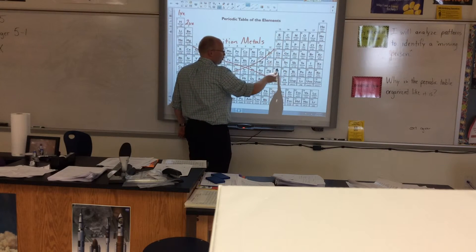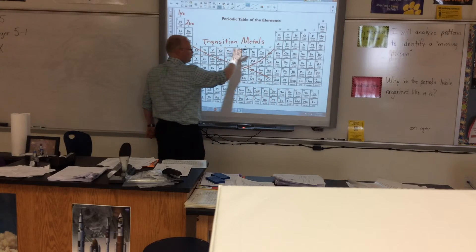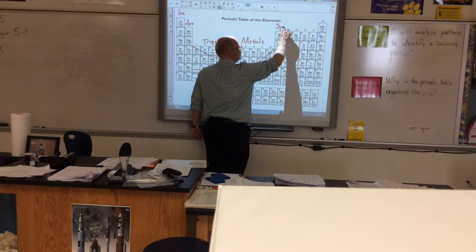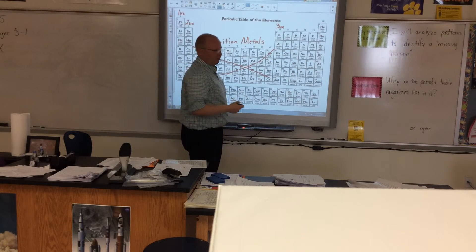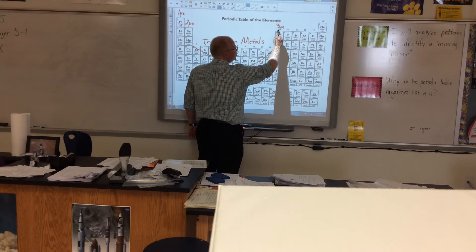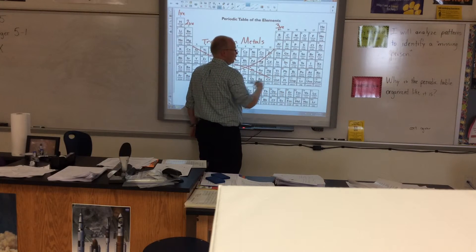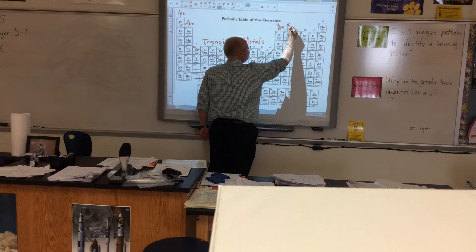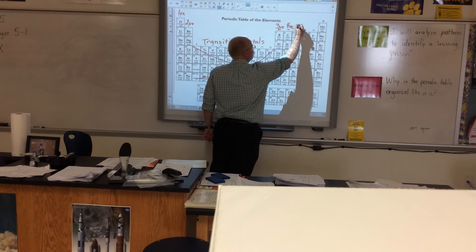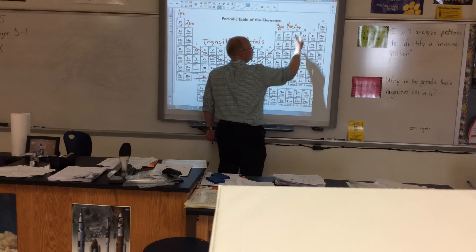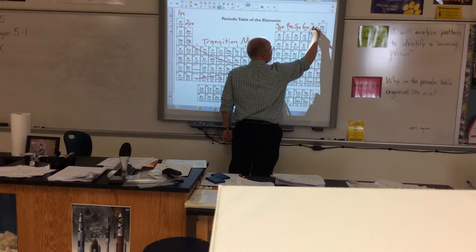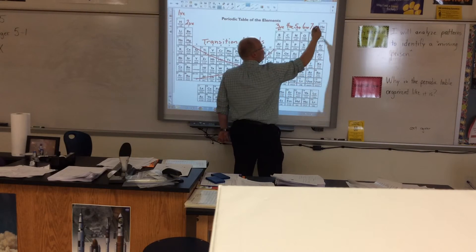Over here, group 13 — because we skipped the transition metals — group 13 all has three valence electrons. A good way to remember that: since it is group 13, if you just cross out that one, the remaining number tells you how many valence electrons there are. Same all the way down the line. So group 14 has four valence electrons, group 15 has five, group 16 has six, group 17 has seven, and group 18 has eight.